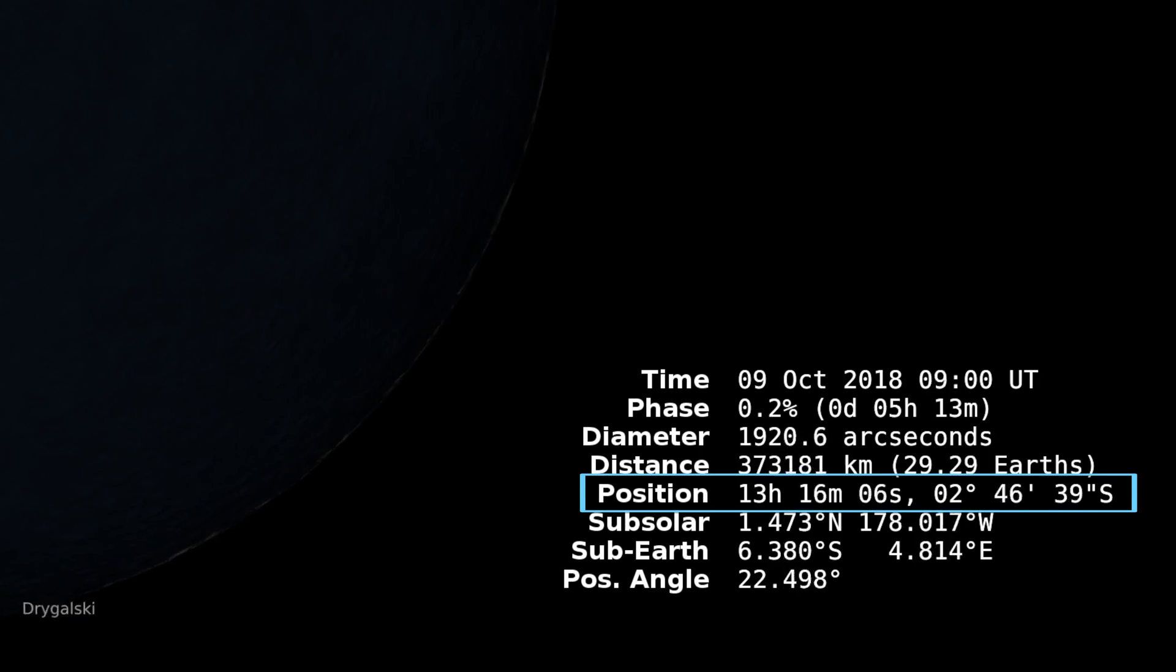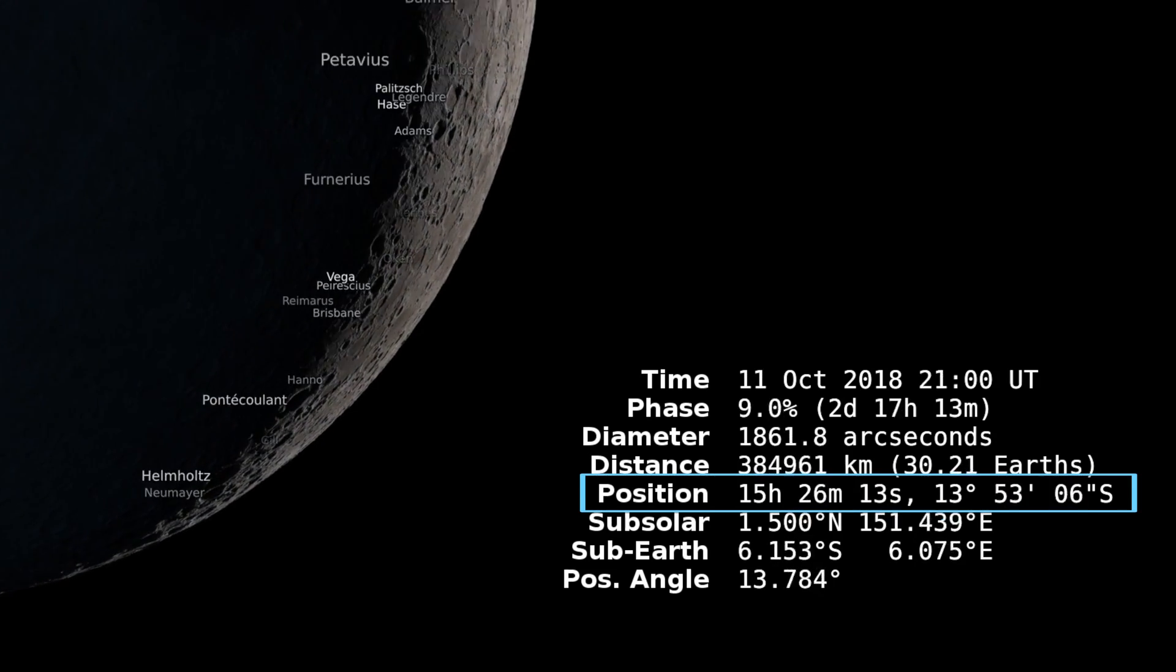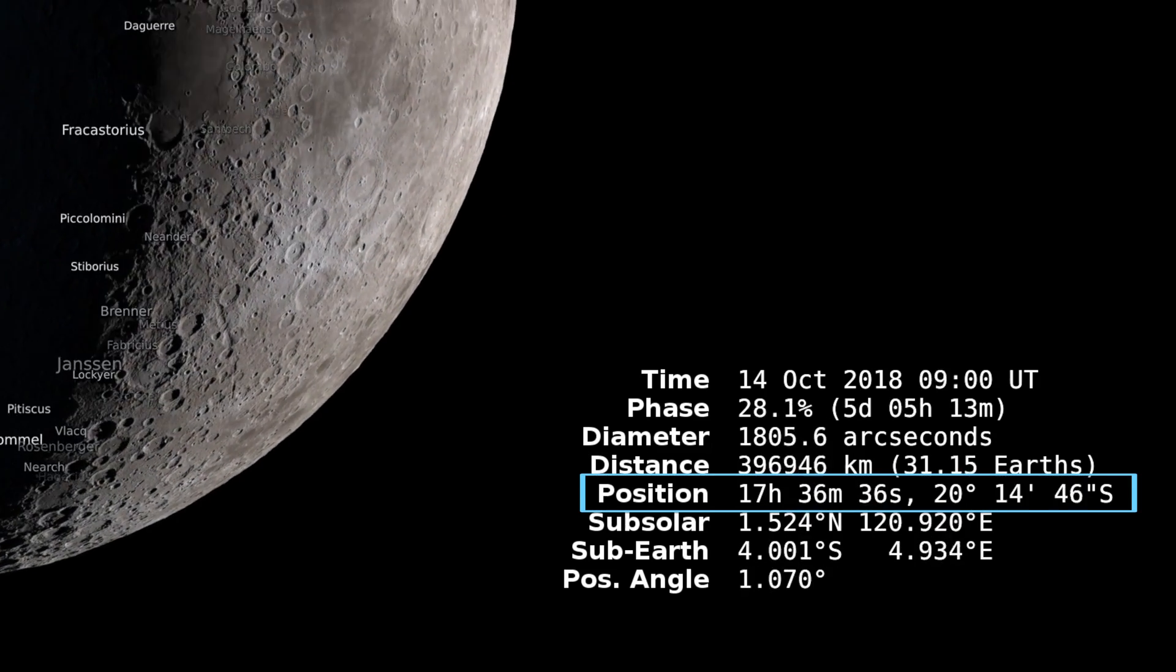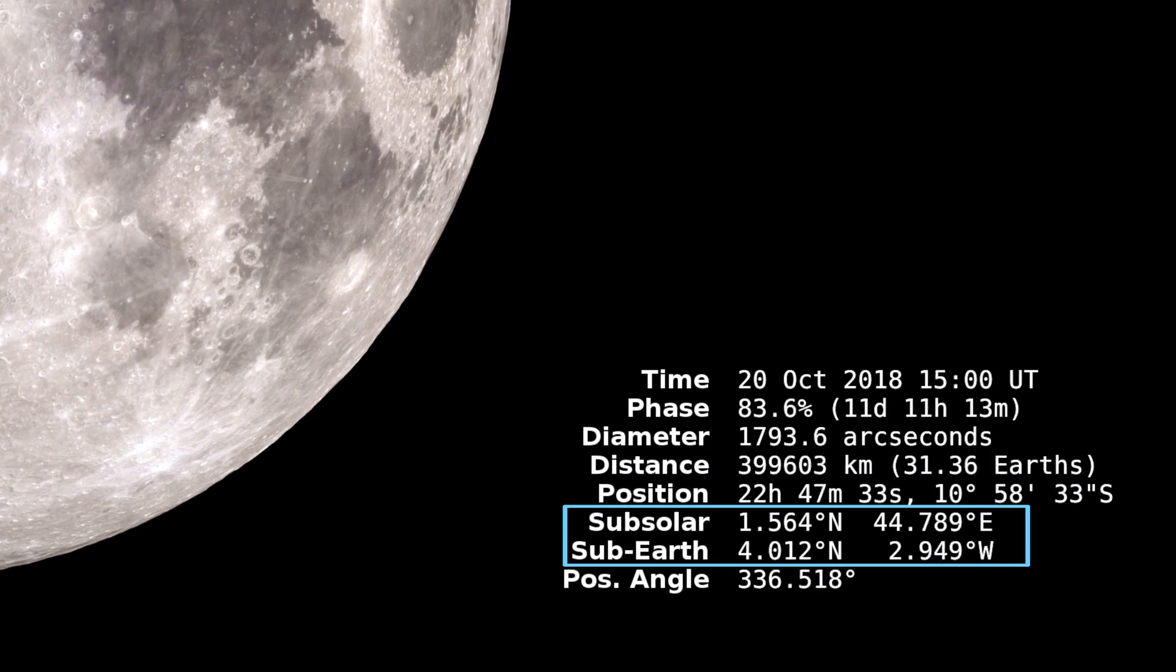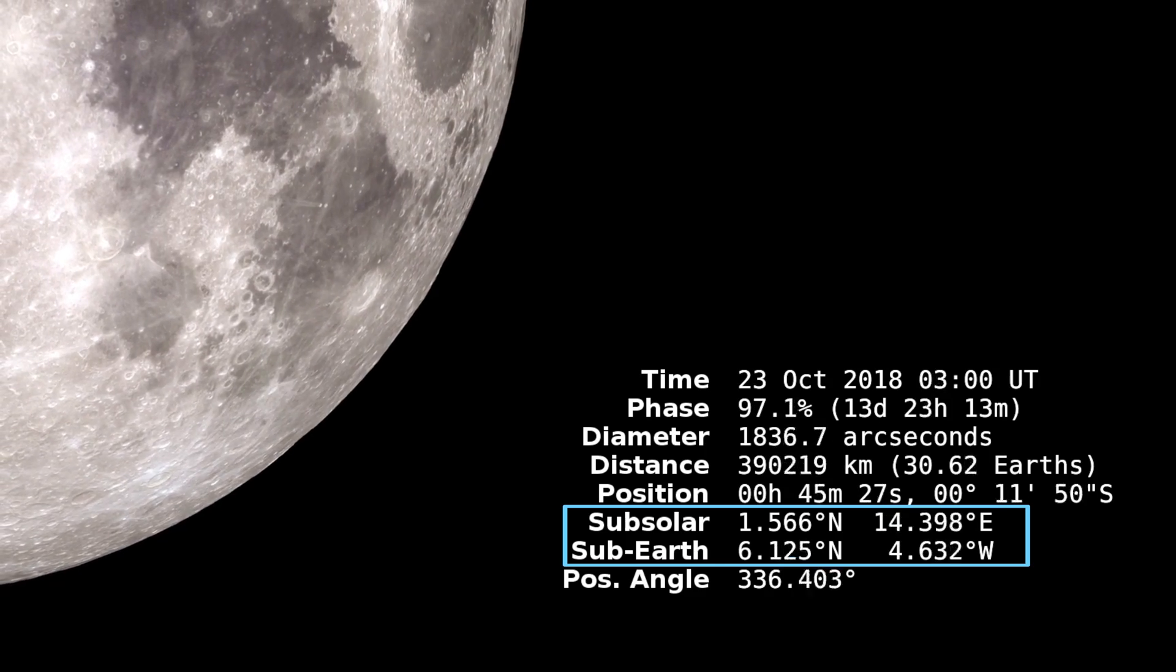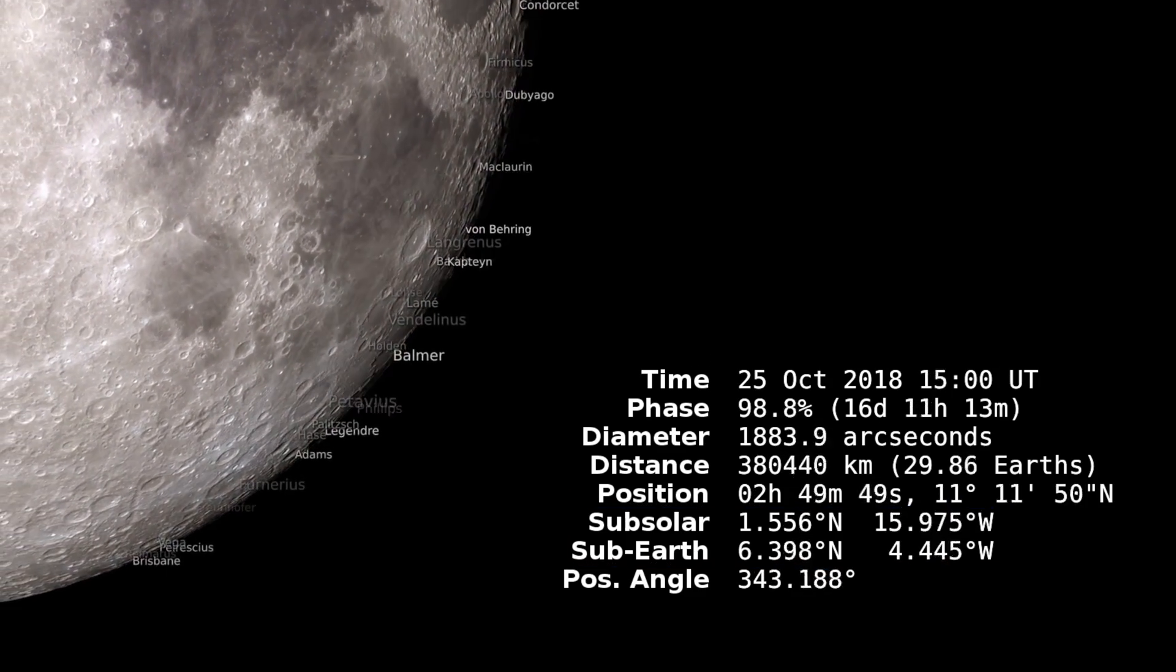Position is right ascension and declination. So that's where it is located on the sky at that particular point. The sub solar and sub earth points we've discussed that, that just tells you where the sun and the earth would be 90 degrees overhead.